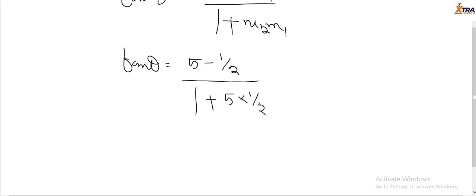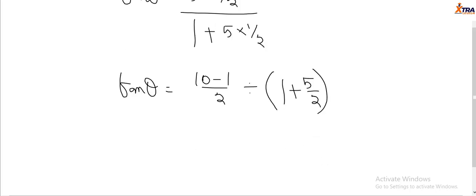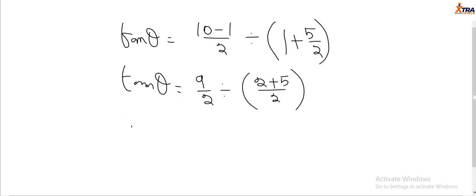Let's simplify this. We have tan theta equals, finding the LCM, that would be 10 minus 1 over 2. I will change this to division with brackets 1 plus 5 over 2. So tan theta equals 9 over 2 divided by 2 plus 5 over 2, which is 9 over 2 divided by 7 over 2.